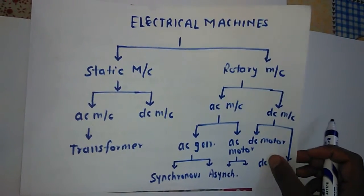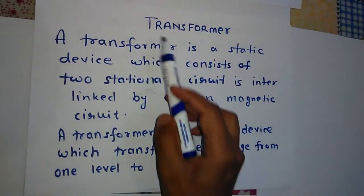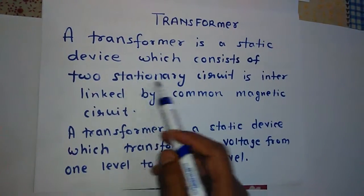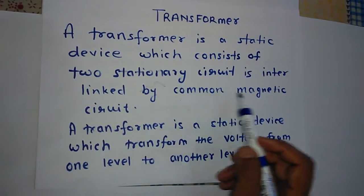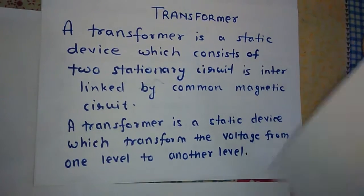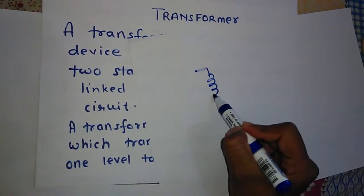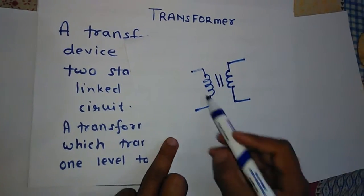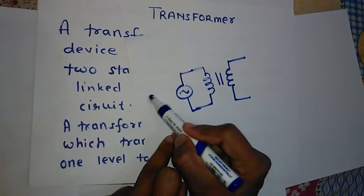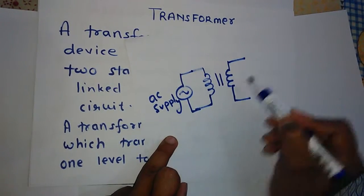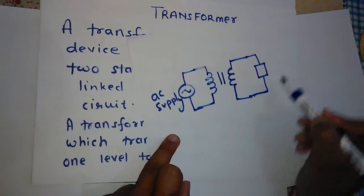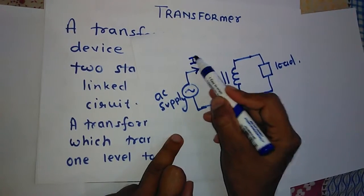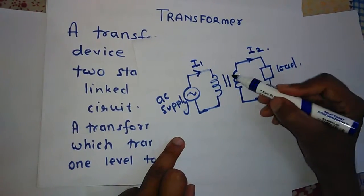Now we will start the first chapter with the transformer. A transformer is a static device which consists of two stationary circuits interlinked by a common magnetic circuit. It has two windings: one is the primary winding and the second is the secondary winding. The primary winding is connected to the AC supply, and the current on the primary side is I1 while the current on the load side is I2. Between the windings there is a core, also called the magnetic core.